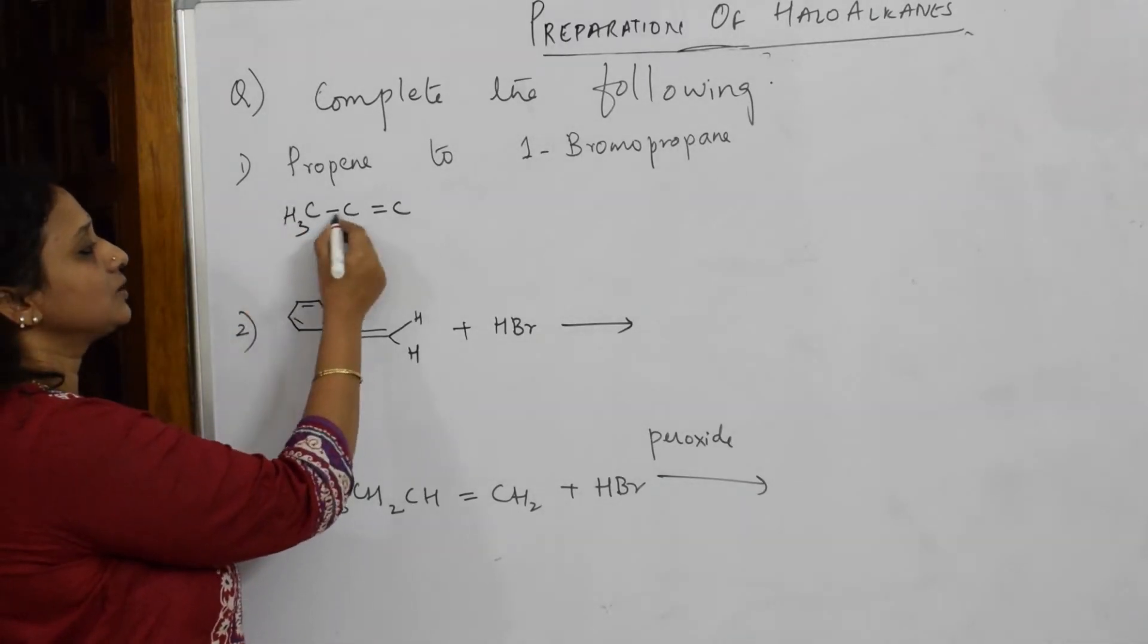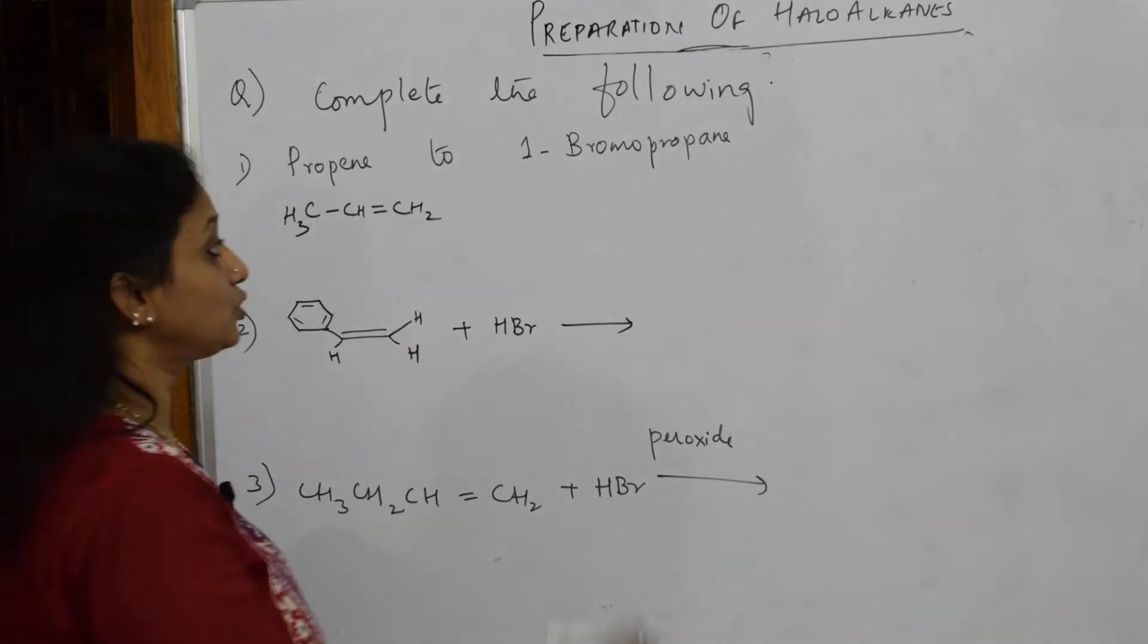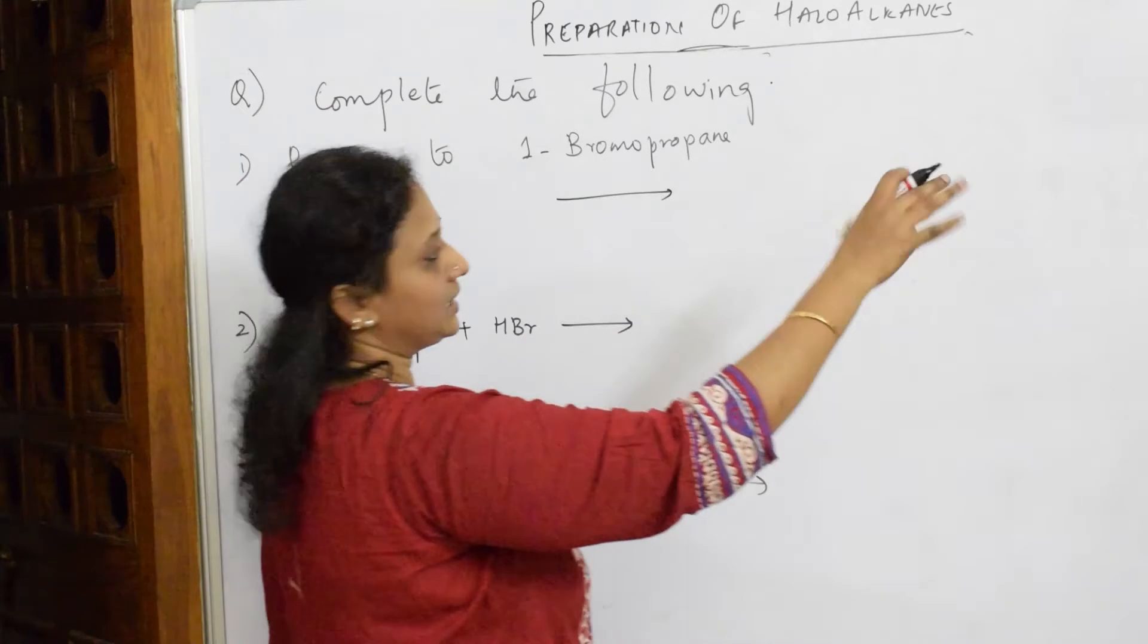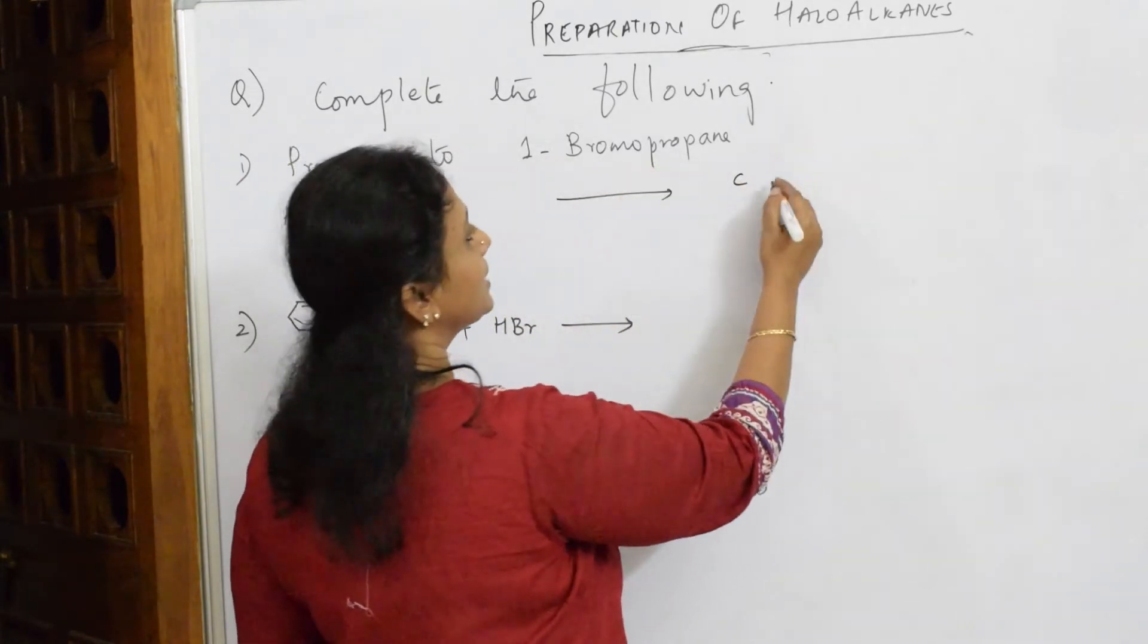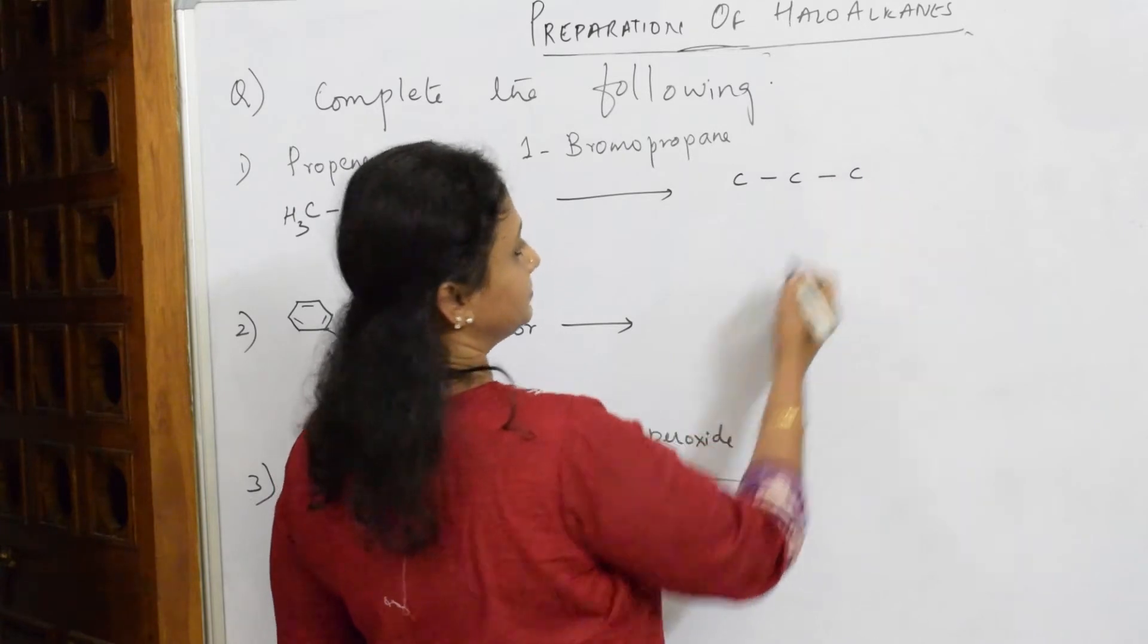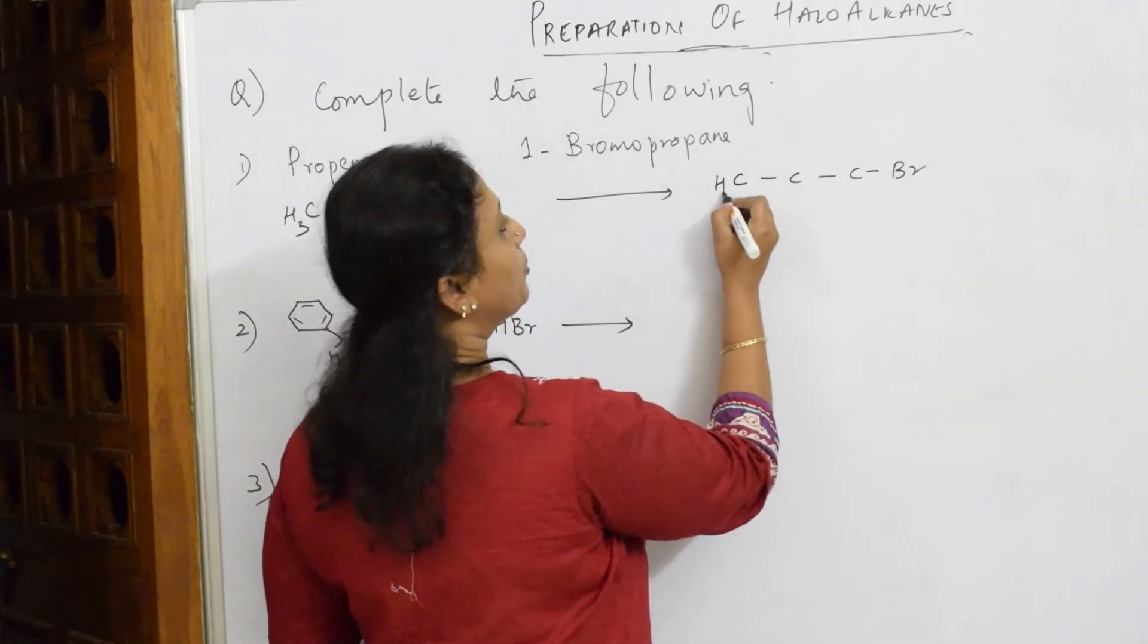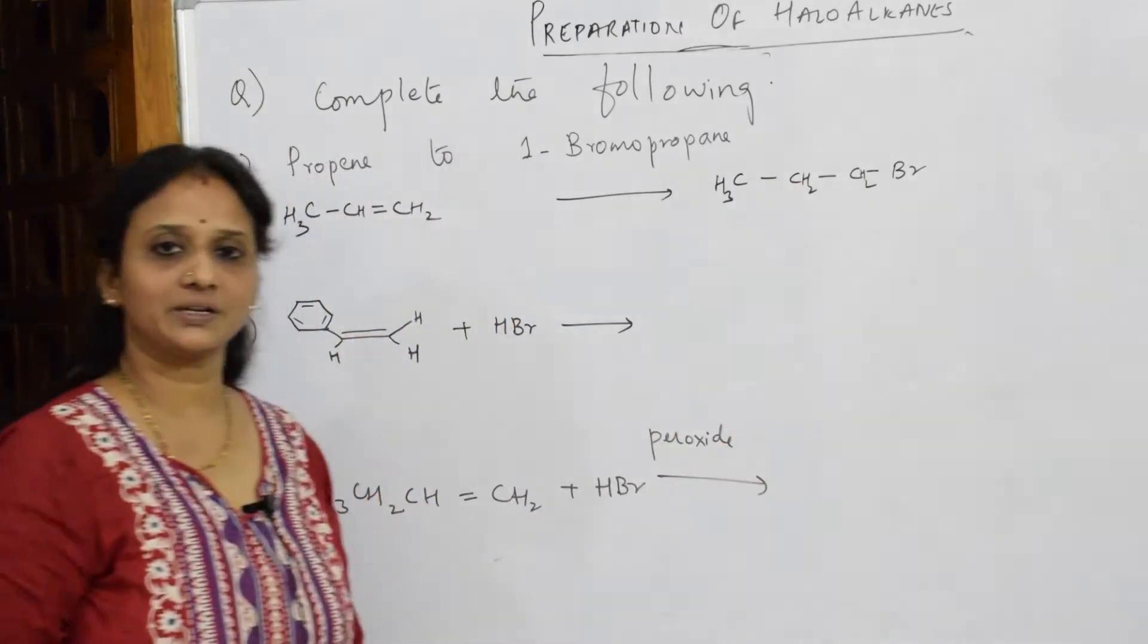So let us write CH3, one, two, three, H and CH2. Now what should I convert it to? 1-bromopropane. So just put an arrow and write this compound again. One, two, three. Yes, one bromopropane: CH3, CH2, CH2Br. I have to prepare this.